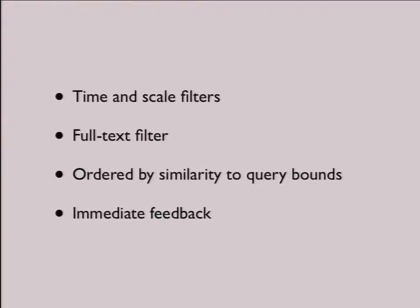It will put at the top of the list those maps that match most the area you're looking at. This is important because world maps cover everything, so if you just ask for intersection, you will get a lot of nonsensical results. If I'm interested in London, I don't want to see a world map. Another important fact is that it has immediate feedback — it's fast. When you pan around, you immediately see results. That's what drives the user interaction.